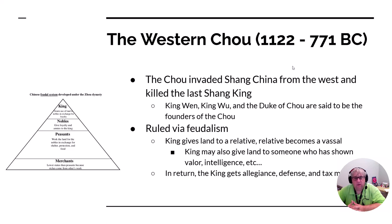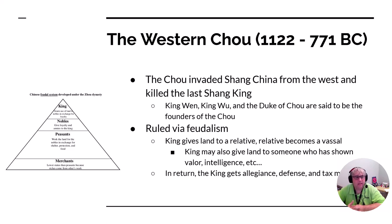After the Shang, we have a group known as the Zhou, broken into the eastern Zhou and the western Zhou. The western Zhou came first, and they invaded from the west — they invaded Shang China and killed the last Shang king.